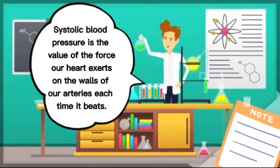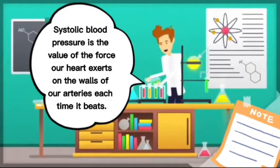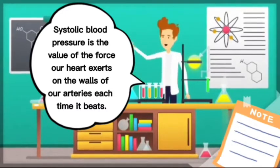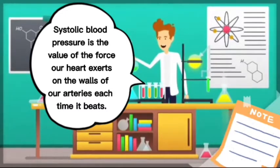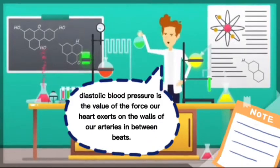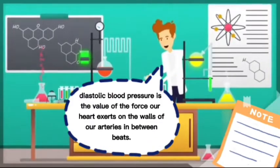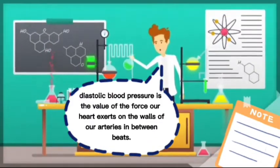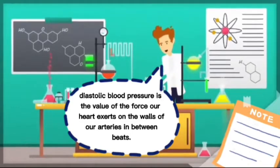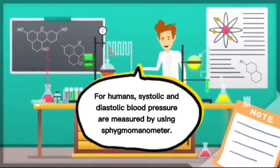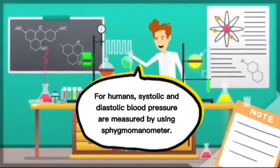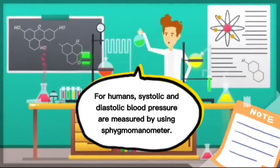Systolic blood pressure is the value of the force our heart exerts on the walls of our arteries each time it beats. Diastolic blood pressure is the value of the force our heart exerts on the walls of our arteries in between beats. For humans, systolic and diastolic blood pressure are measured using a sphygmomanometer.